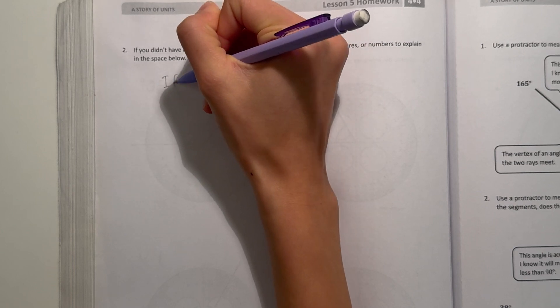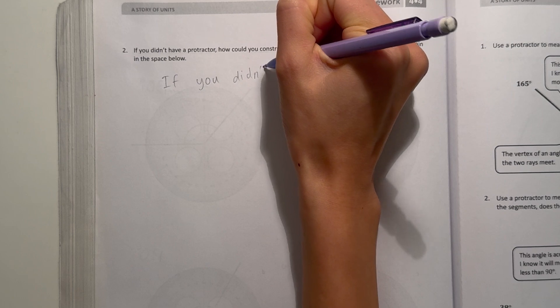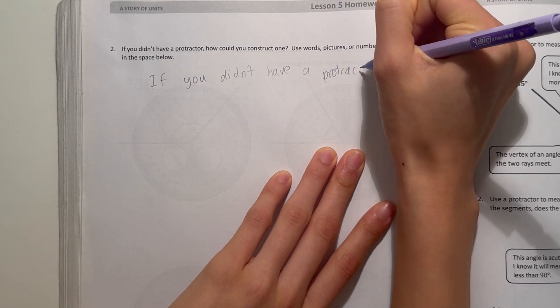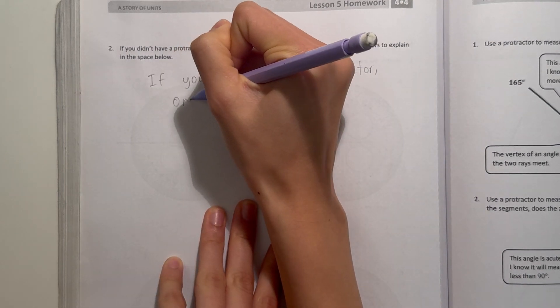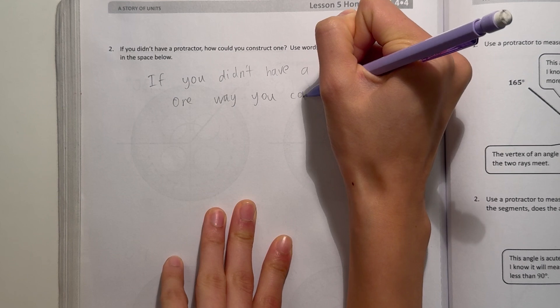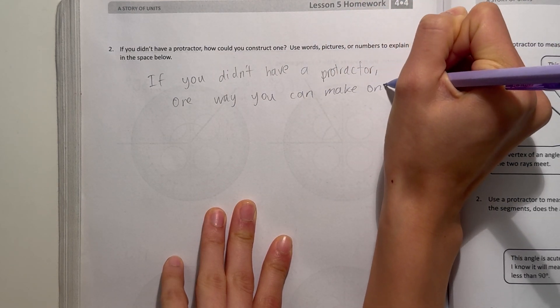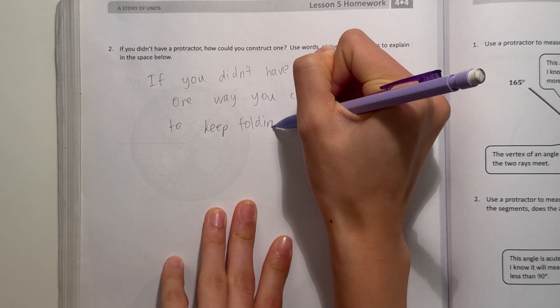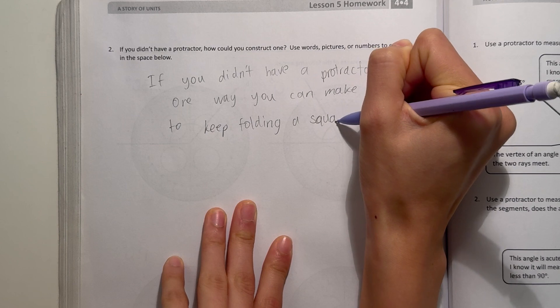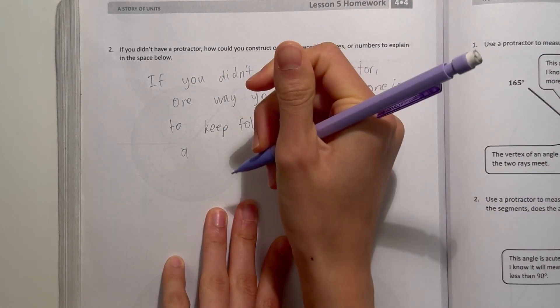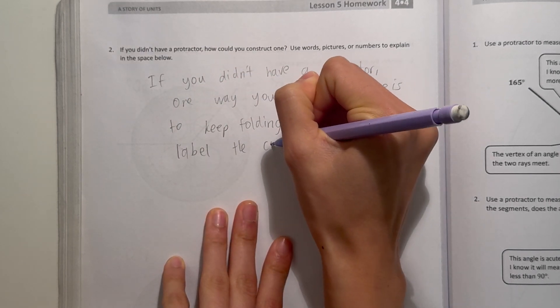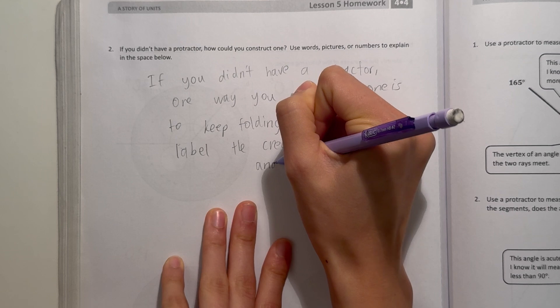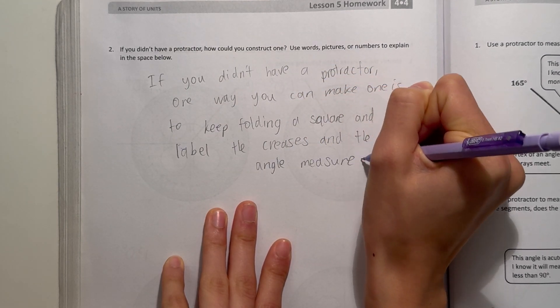So if you didn't have a protractor, one way you can make one is to keep folding a square and label the creases and the angle measures.